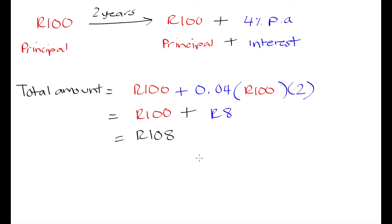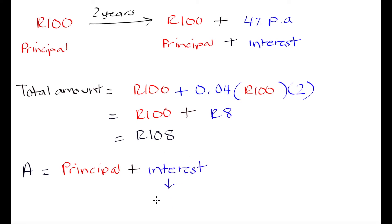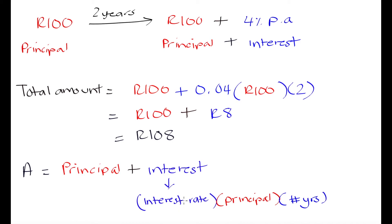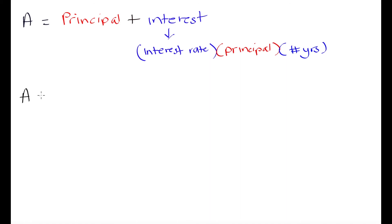Now let's put what we've done into a formula we can apply to any example, whether the term is one year, two years, or ten years. The amount we have to pay back — abbreviated A — equals our principal, because we have to repay what we initially borrowed, plus interest. We calculate interest by taking the interest rate, multiplying it by the principal to get the percentage of principal, and then multiplying by the number of years.